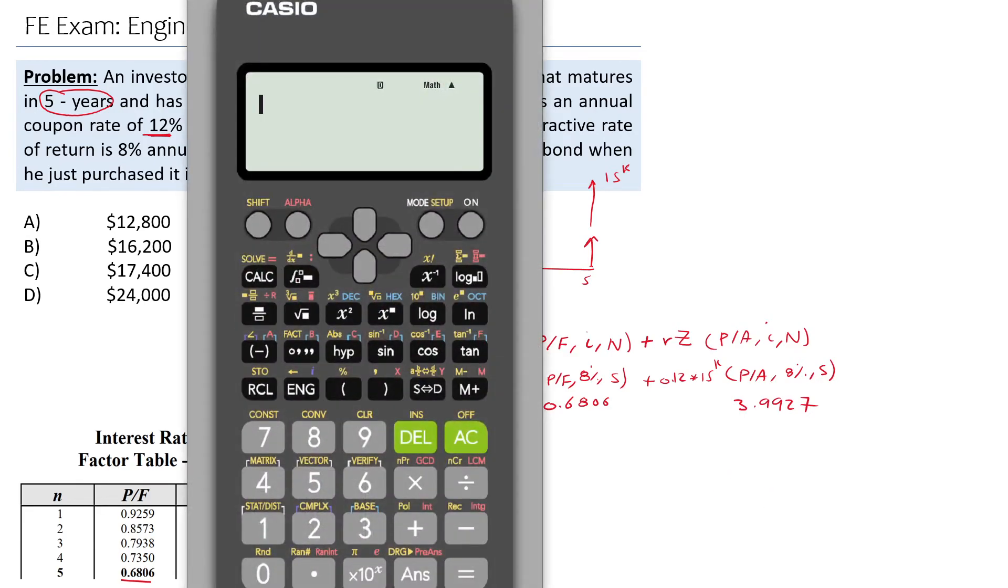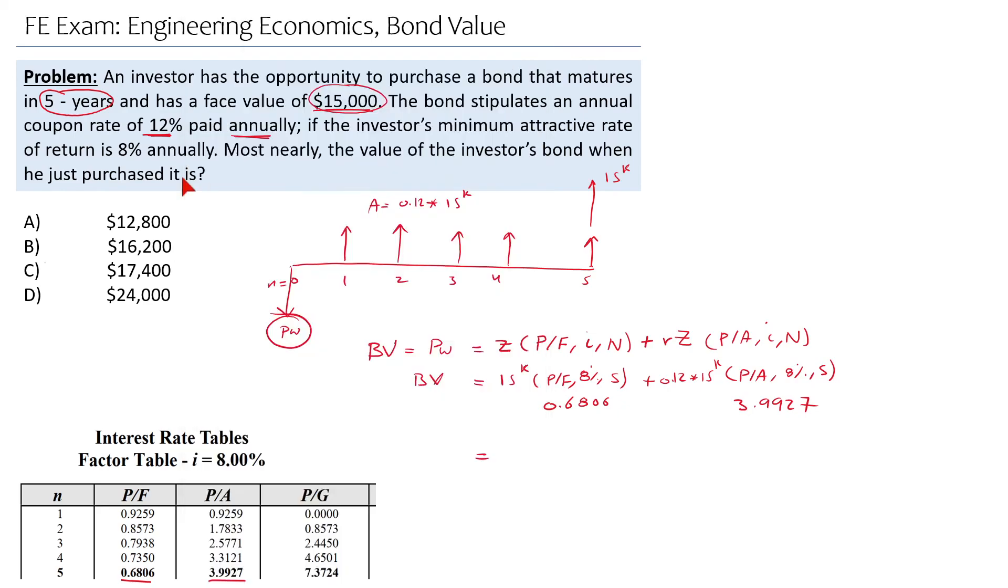The calculation gives us $17,395, which is answer C. Just make sure when you are reading the problem statement that you can clearly identify which percentage is the coupon rate and which percentage is your interest rate. Thank you.